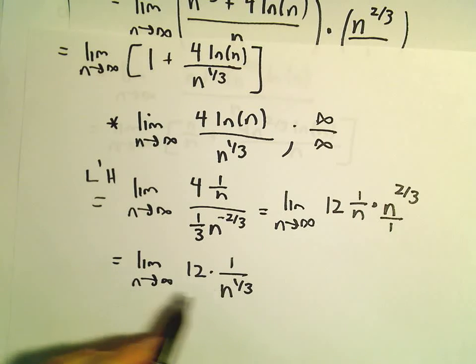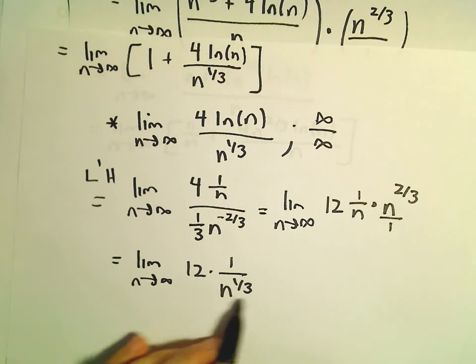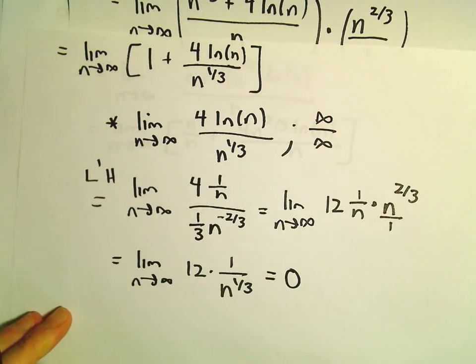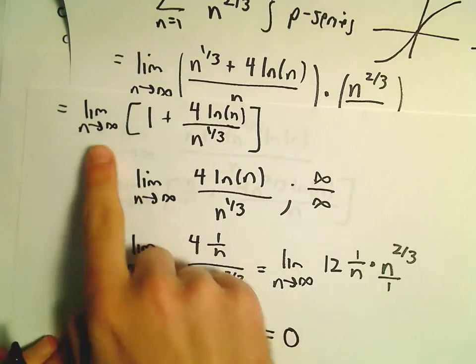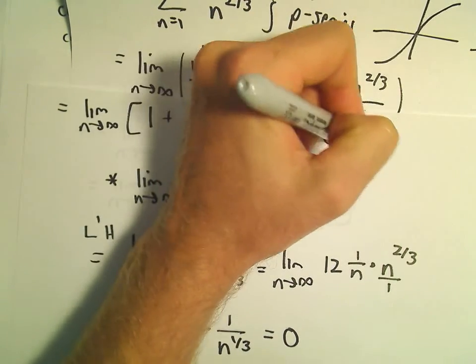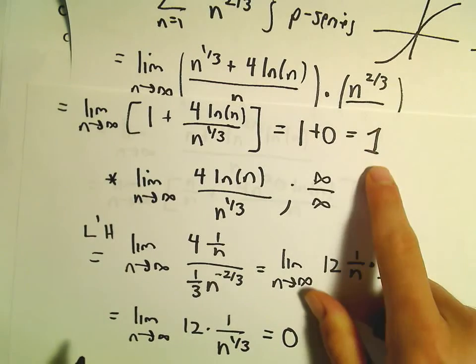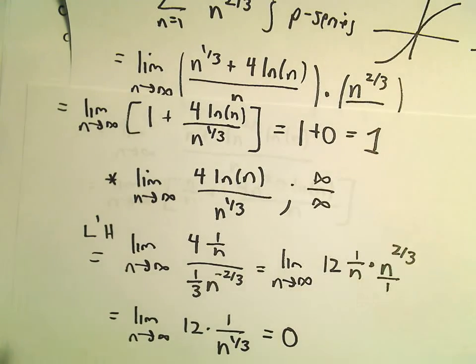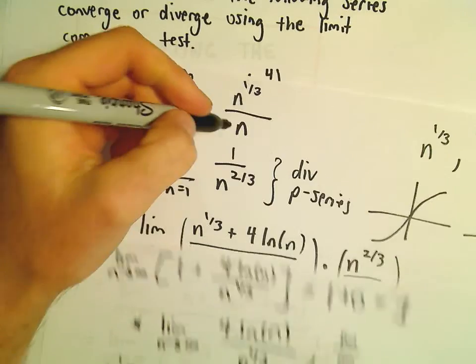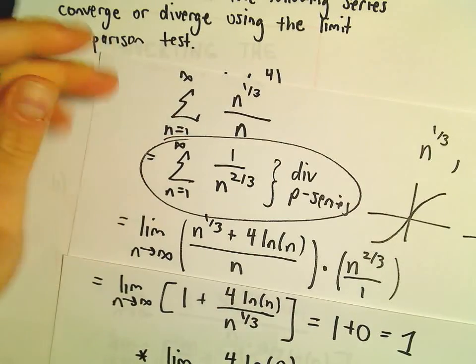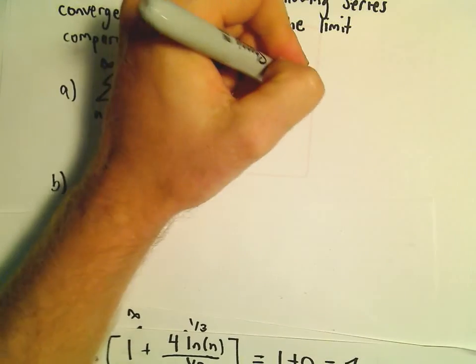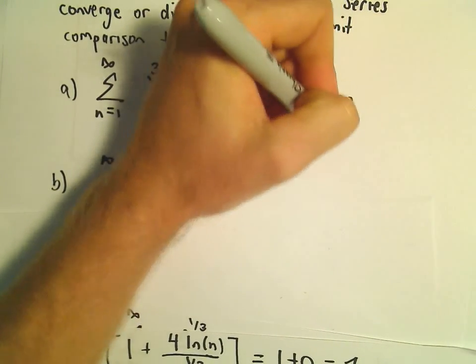And as n goes to infinity, the denominator is going to get really big. We've got 12 over a big number. That limit's going to go to 0. So our limit up here will be simply left with 1 plus 0, which is 1, a positive finite value. So both of our series do the same thing in this case. And since we compared it to a divergent p-series, we can say, well, our series of interest here must also diverge.